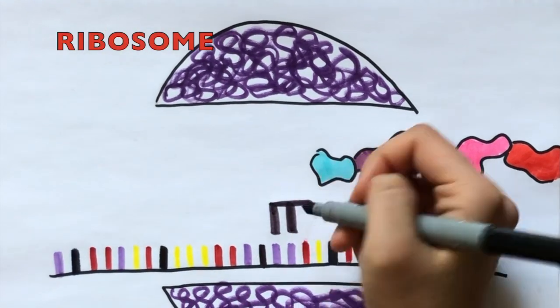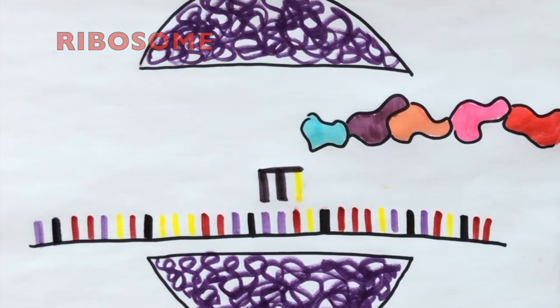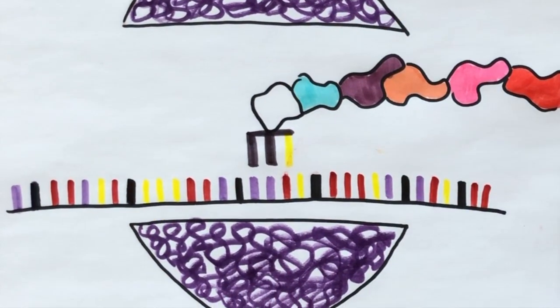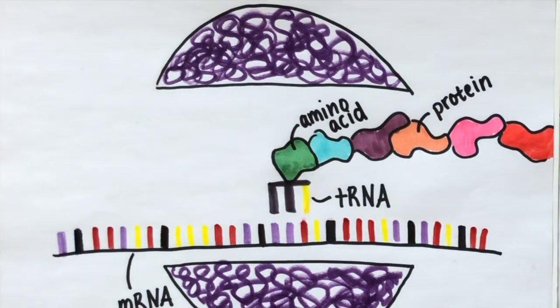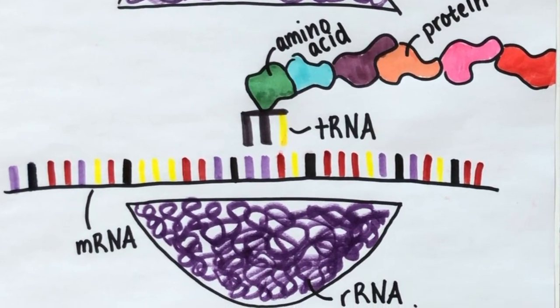Ribosomes are organelles which make proteins. They work by matching sections of mRNA containing the cell's genetic code with matching sections of tRNA which carry amino acids, creating a protein. The ribosome itself is made up of rRNA and proteins.